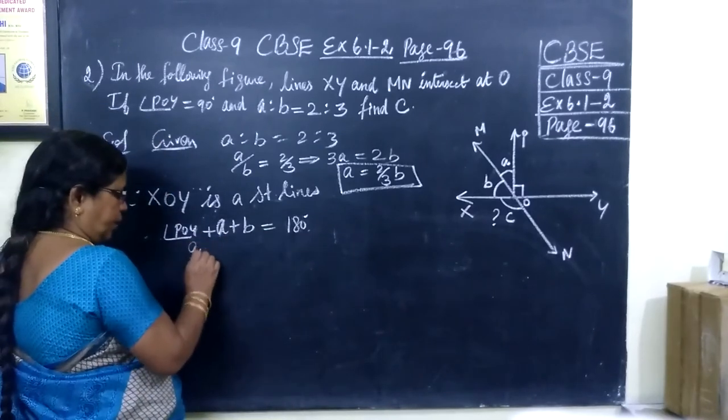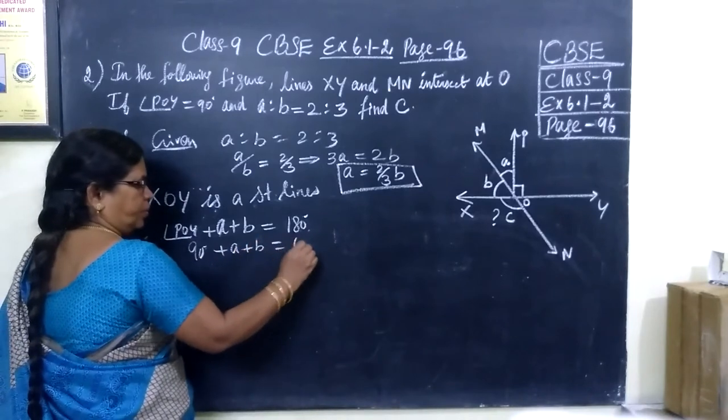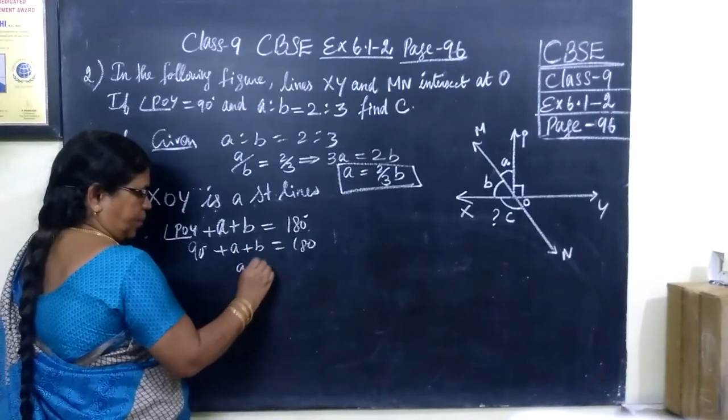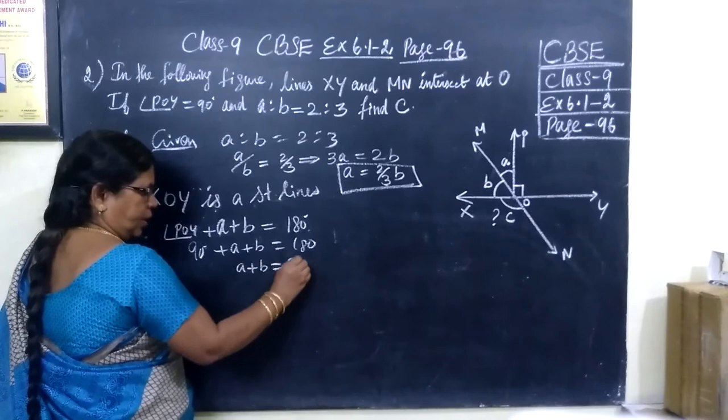So this is given 90. So 90 plus A plus B equals 180. That is, A plus B equals 90.